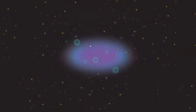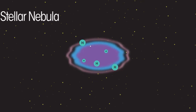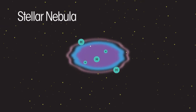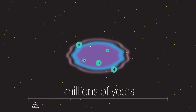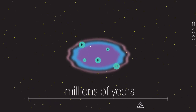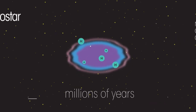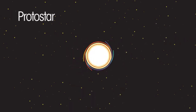All stars initially form from a cloud of dust and hydrogen gas. This cloud is called a stellar nebula. Gravity over millions of years causes the dust and gas to spiral together. The particles move faster and eventually reach temperatures of millions of degrees to form a protostar.